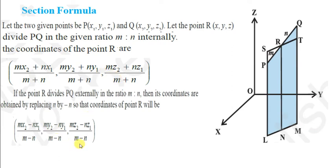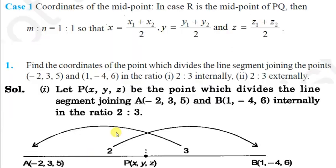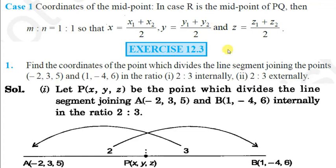If R is the midpoint of PQ, then m:n will be 1:1, so the coordinates of R will be x = (x1+x2)/2, y = (y1+y2)/2, and z = (z1+z2)/2. Based on these formulas, let us do a few questions from the exercise.